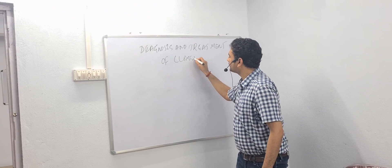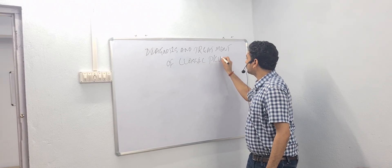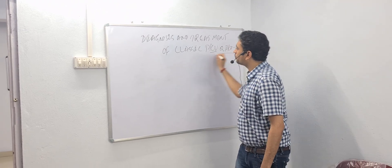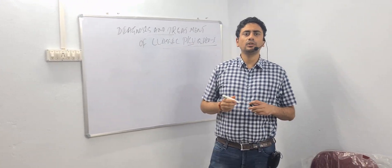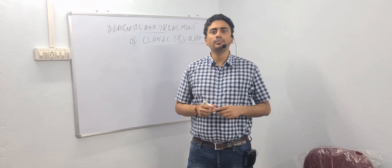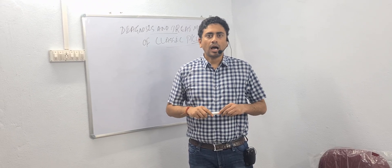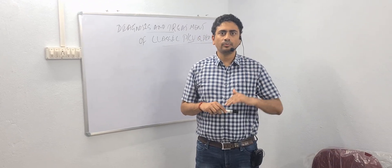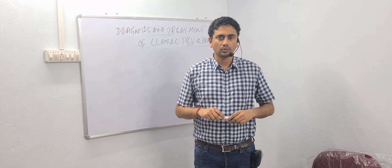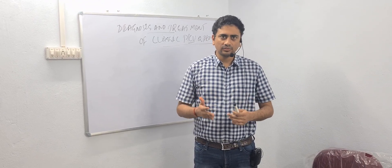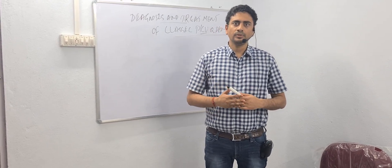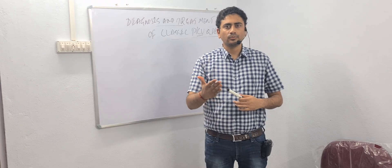Classic phenylketonuria type 1 happens due to a mutation in the gene coding for the enzyme phenylalanine hydroxylase. Once signs and symptoms are present, or when we are going for screening of phenylketonuria, how can diagnosis be made? There are various tests available, and we will go through them.